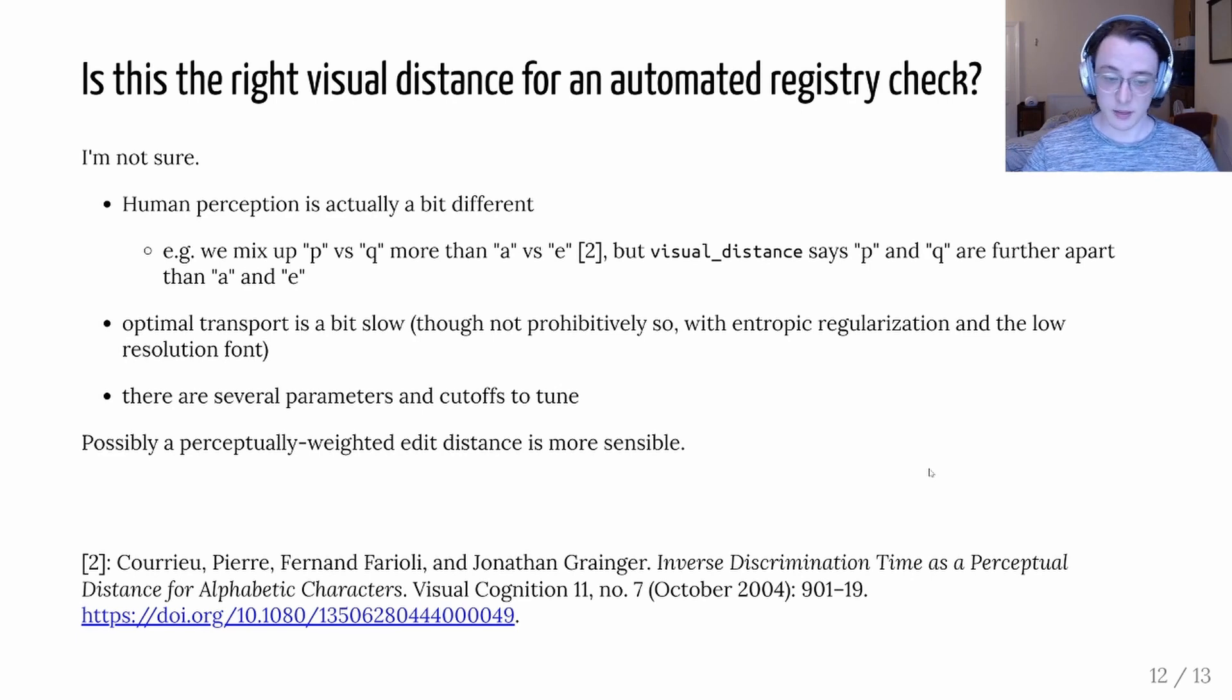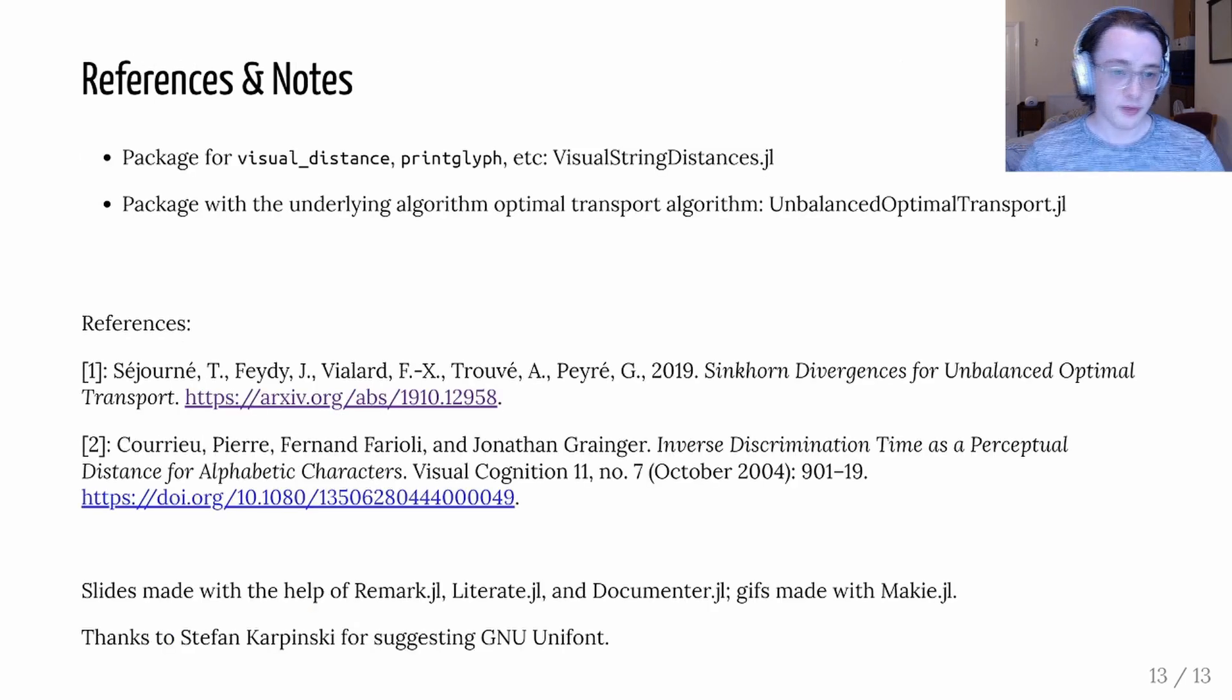We could actually use something like this optimal transport to get the weights for how different are different characters and things like that. The package for visual distance print glyph and so forth is in visual string distances and the package with the underlying optimal transport algorithm is unbalanced optimal transport. All right thanks very much.